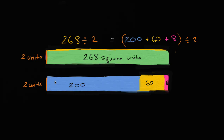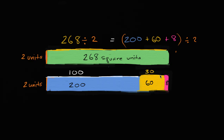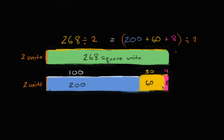So I can take each of them and divide by two. What is this dimension right over here going to be? Well, two times that is going to be 100 — so this is going to be 100. We got that by 200 divided by two. What's 60 divided by two? Well, 60 divided by two is going to be 30. So this part of the field is going to be 30 in that direction and two in this direction. And then finally, what's this section going to be? It's going to be eight divided by two, which is four. So this whole length up here is going to be 100 plus 30 plus four, or 134.